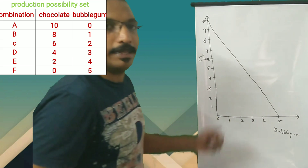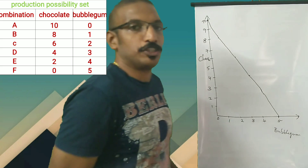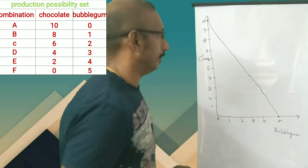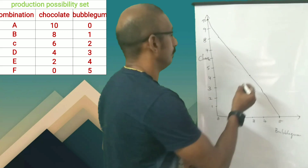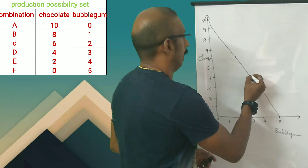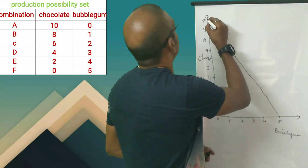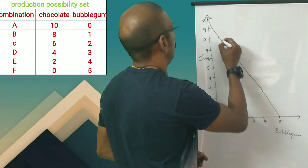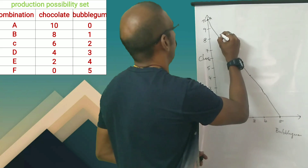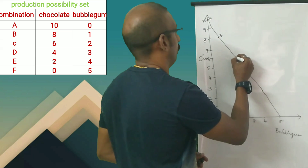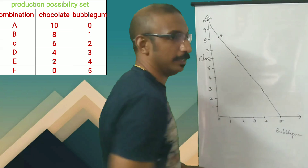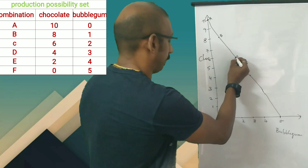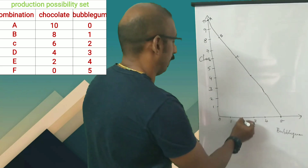This is the production possibility curve. This is combination A, combination B, combination C — all the combinations are marked on the curve.